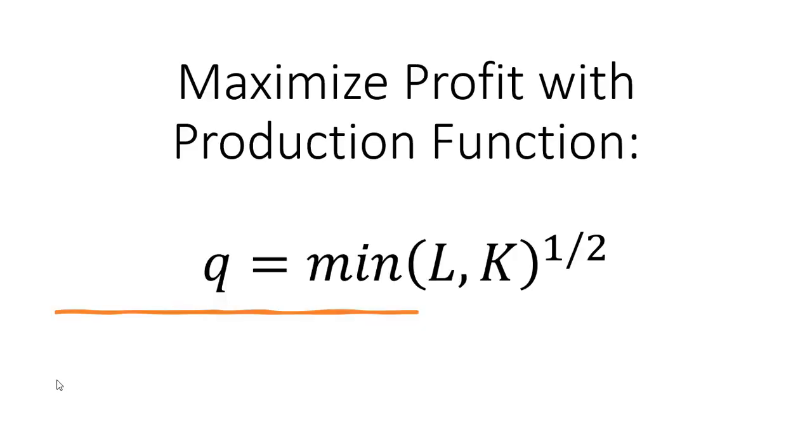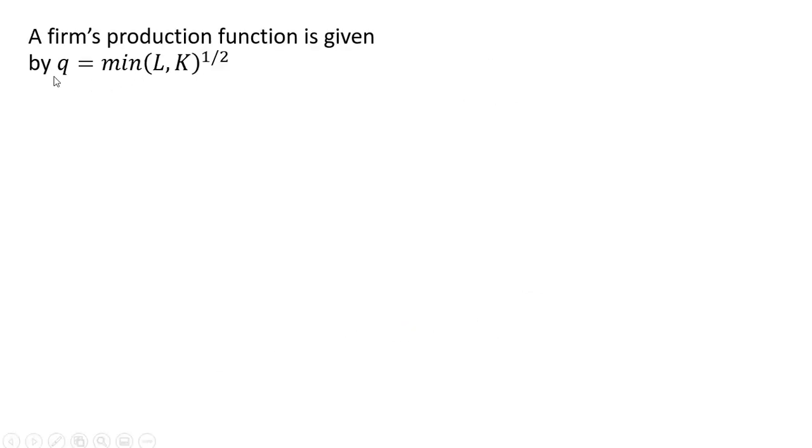Hello. In this video, we're going to maximize a firm's profit subject to the following production function. If the firm's production function is given by the following, Q, the quantity of output, is going to be the minimum of L or K raised to the one-half power.